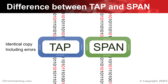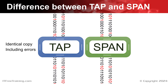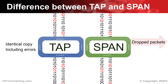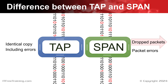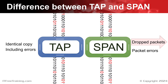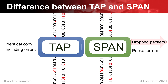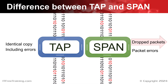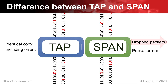SPAN, in contrast, does not create an identical copy and can in fact drop packets. This happens for two main reasons. Firstly, due to packet errors — if there is something wrong with a packet, for example it is incomplete or corrupt, the packet will be dropped. If you are troubleshooting a network problem such as a damaged cable that is causing packets to be dropped, you won't be able to detect this using SPAN.